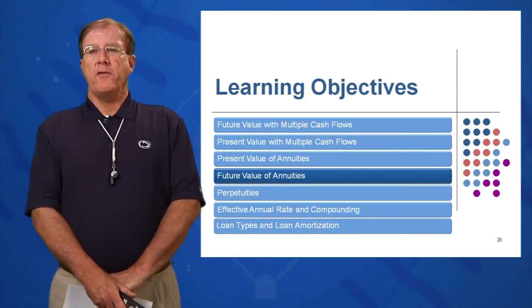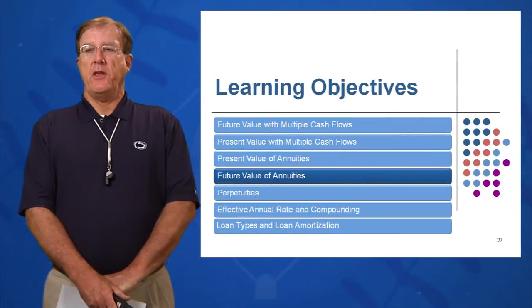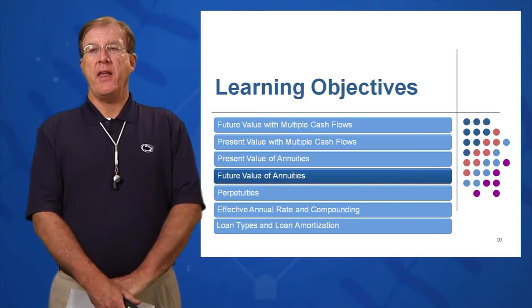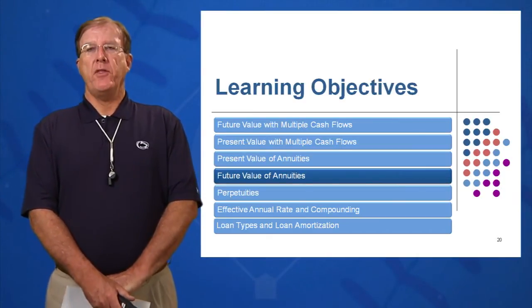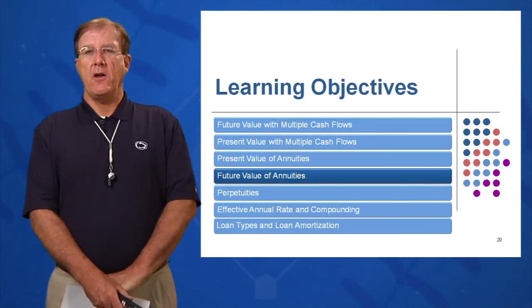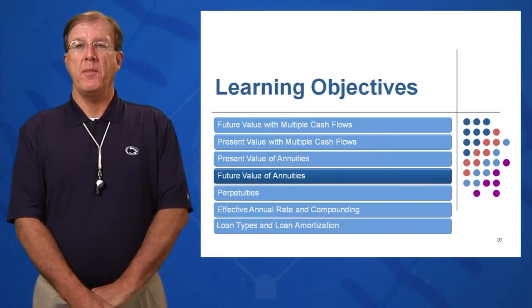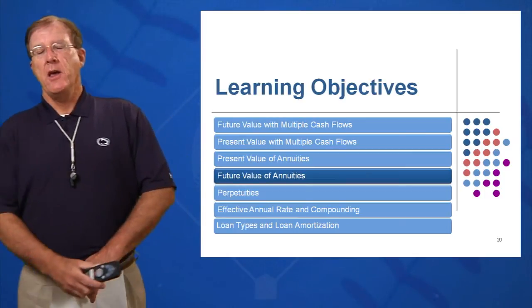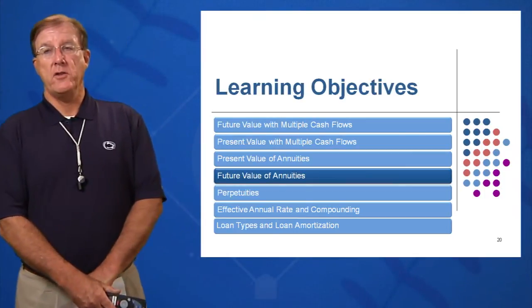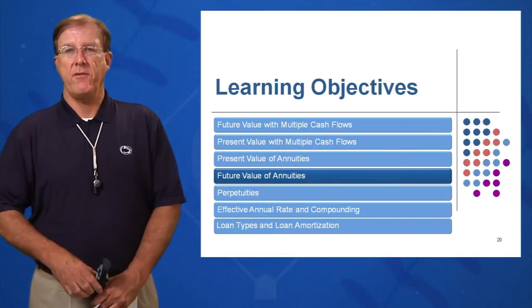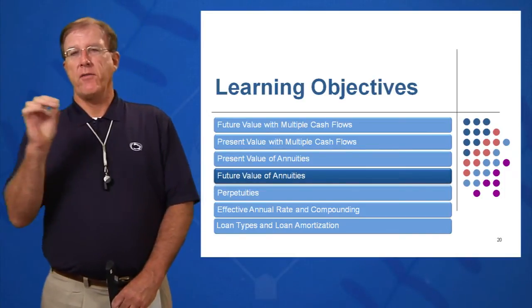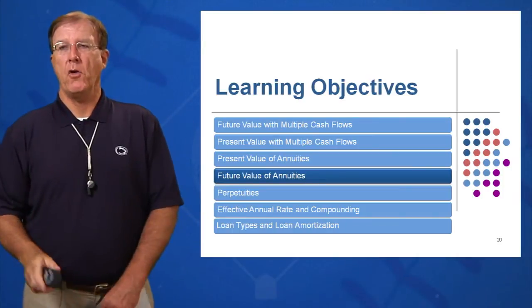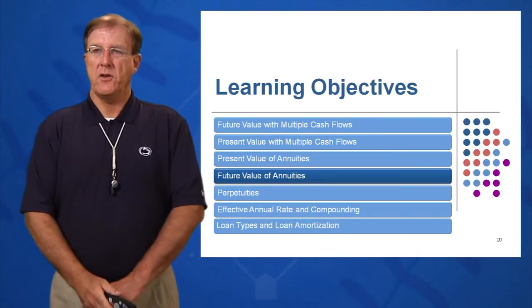Learning objective number four is the future value of annuities. How do I take a certain amount each month, invest it, and become wealthy? I can't afford $15,091.13 in a lump sum today to invest to get to my million dollars by investing at 10% for 44 years. So is there a smaller amount I can invest each and every year, each and every month, taken out of my paycheck at 10% and still reach my goal of becoming a millionaire? And the answer is obviously yes.